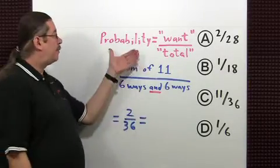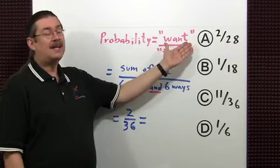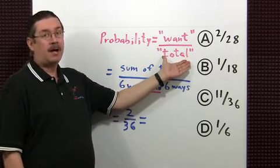First off, a probability is just the number of ways of getting what we want divided by the total number of possible outcomes.